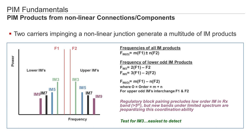Non-linear behavior of the components used in the transmission system creates additional frequencies on the transmission system, which nobody would like to have. These products, which we call PIM, show up in several orders. IM3 is the most critical one. As base station systems are getting more and more sensitive on the receiver side, IM5 and IM7 can also be problematic. If there is no IM3, then there will be no IM5 or IM7 either.